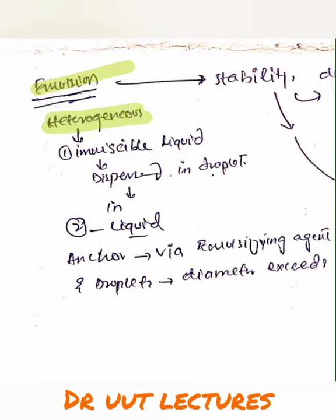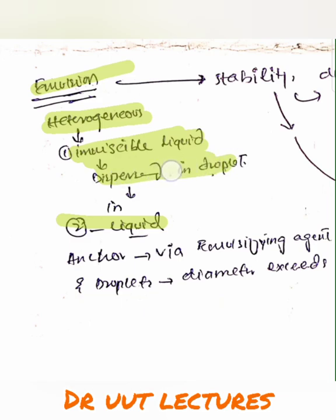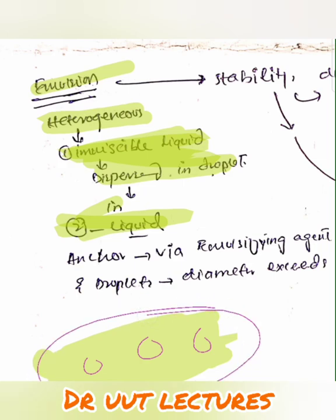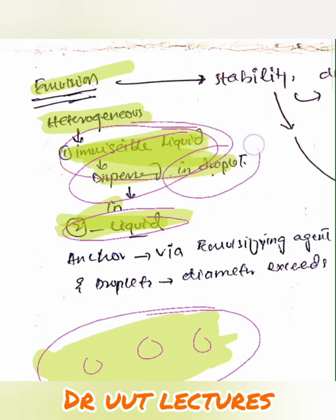Emulsion is a heterogeneous system because we have two phases. One is the immiscible liquid phase, which is dispersed in the shape of drops in the second phase. When drops are dispersed in a liquid phase, the system becomes an emulsion. One phase is immiscible in the other, and this immiscible phase is dispersed in the form of droplets in the second phase.